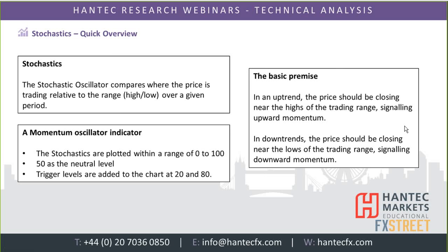Stochastics are basically the third momentum indicator I'm going to look at after RSI and MACD lines. It is used as a primary indicator, but a lot of the time it's used in conjunction with the RSI, giving you extra confirmation. It's also a momentum oscillator and gives a very good backup to the RSI, which is my favourite momentum indicator. It is an oscillator that goes between 0 and 100, so 50 is the neutral level — the mean line — and there are trigger levels at 20 and 80 to give you different signals.